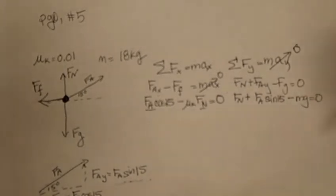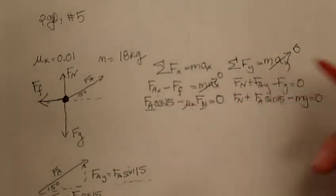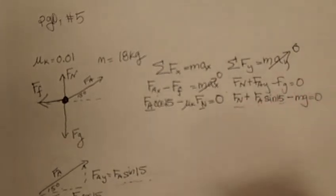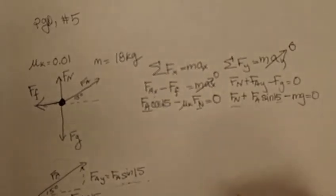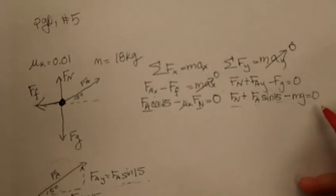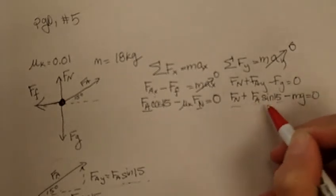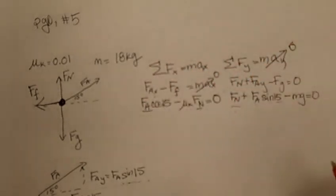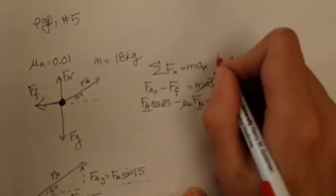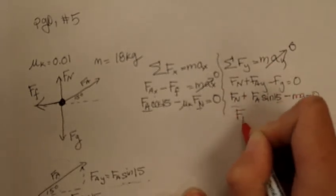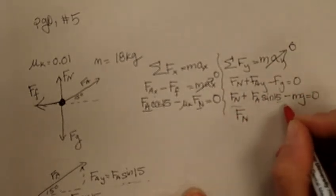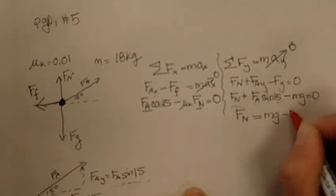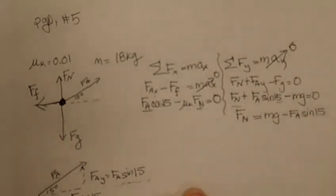And I'm actually not going to plug any numbers in yet. I guess I plugged in the 15 degrees, but I'm going to hold off until I can solve for either FN or FA. So I want to eliminate FN. So this is what my strategy is going to be. I'm going to solve for FN over here, and then I'm going to bring that FN into my X, my horizontal side. So I'm going to isolate FN in this Y equation. I'm just going to subtract minus FA sine 15. I'm going to add MG. So FN is equal to MG minus FA sine 15.